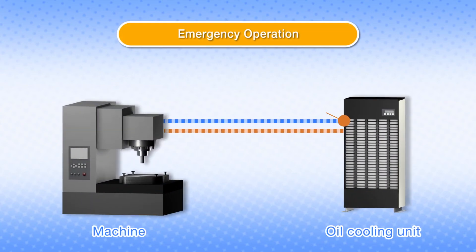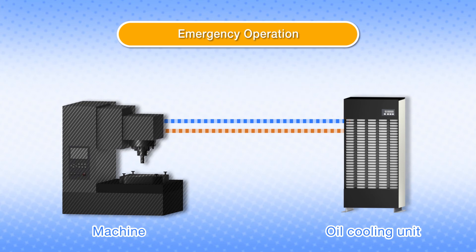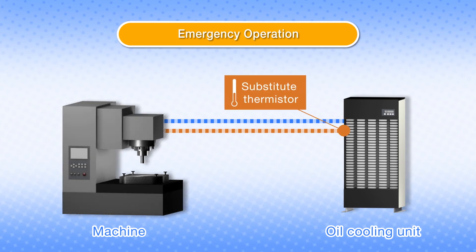In the event of a thermistor error, the oil cooling unit can be operated in emergency mode without using the failed thermistor.